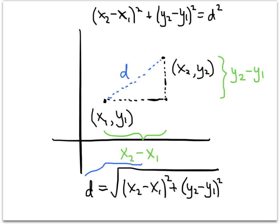And that is what we call the distance formula. I've drawn these points in quadrant one in a specific way, but this distance formula works in general. No matter what your two points are, you plug in your two x-values and your two y-values, compute the square root, and that gives you the distance.